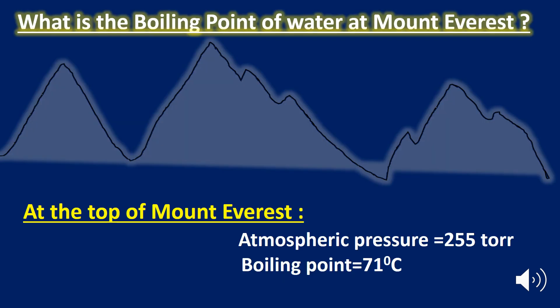Do you want to know the boiling point of water at the top of Mount Everest? As discussed, the boiling point is directly proportional to atmospheric pressure — with a decrease in external pressure, the boiling point decreases. At the top of Mount Everest, the atmospheric pressure is 255 torr, so the boiling point there is 71 degrees Celsius.